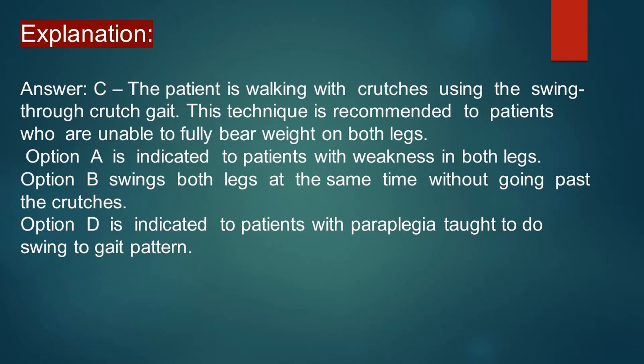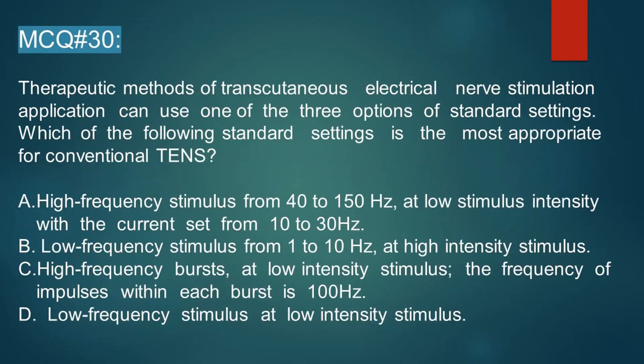At the end we have the last scenario: in the therapeutic method of transcutaneous electrical stimulation (TENS), application can use one of three standard settings. Which of the following standard settings is most appropriate for conventional TENS? Option A: high frequency stimulation from 40 to 150 Hz at low stimulus intensity, with the current set from 10 to 30 Hz.